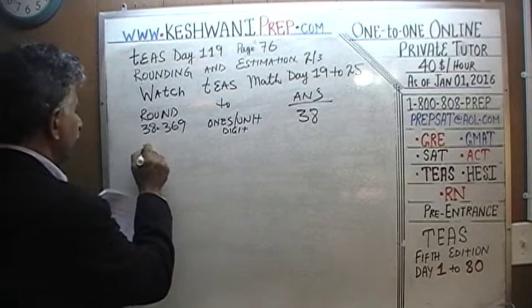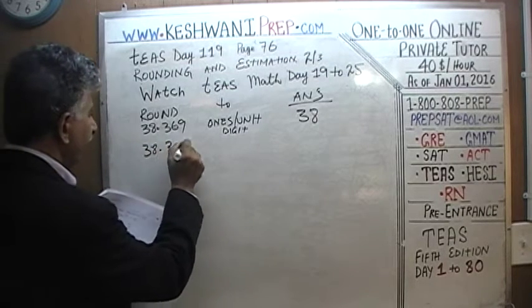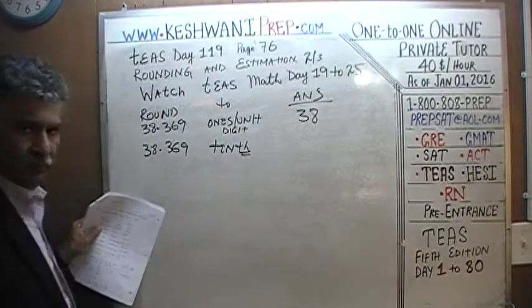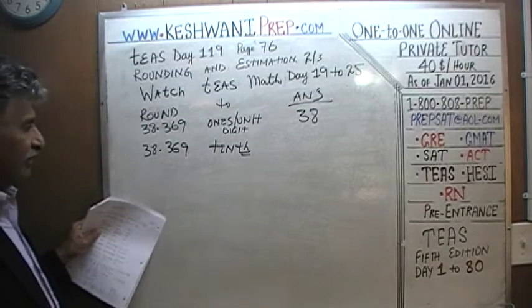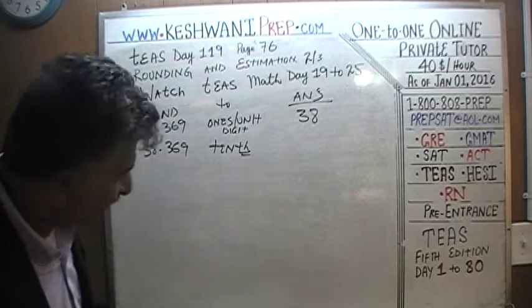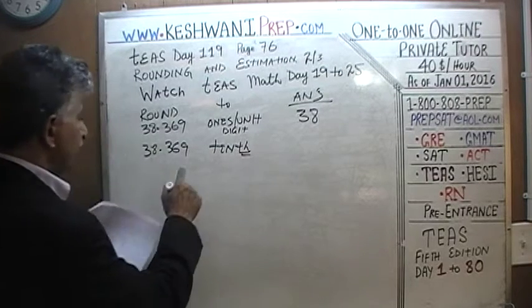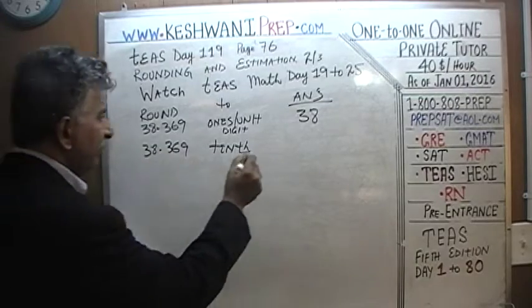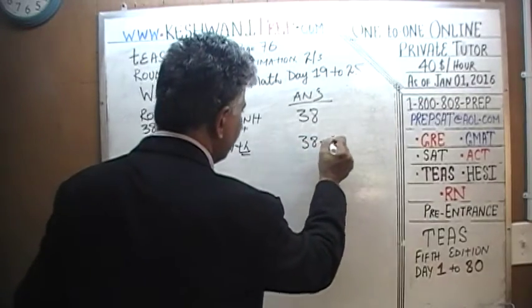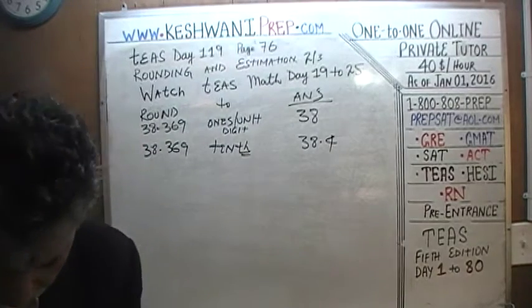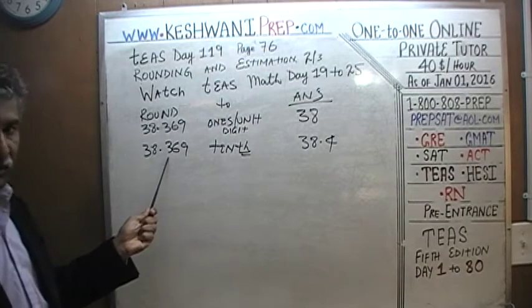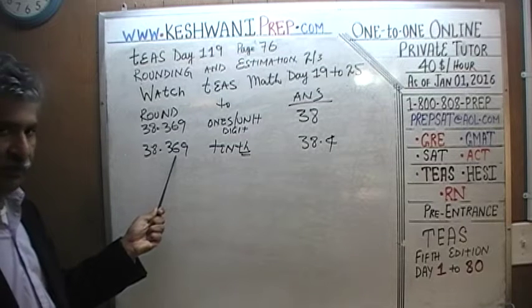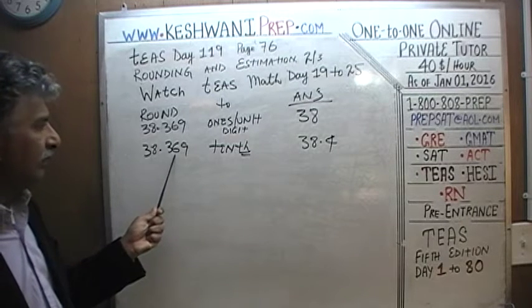How about 38.369 rounded to the tenths digit? The tenths digit is the first digit after the decimal — the 3. The digit after it is 6, which is greater than or equal to 5, so we round up. The answer is 38.4.